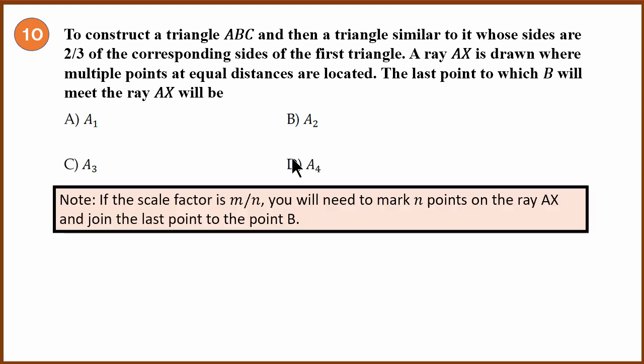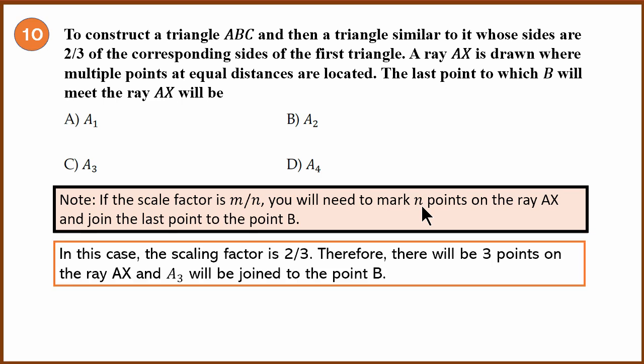In this case they have given a scale factor. We need to find out how many points we have to mark. If the scale factor is M by N, then you need to mark N points. Which means that in this case, there will be 3 points on that ray and A3 will be joined to the point B. The answer is C.